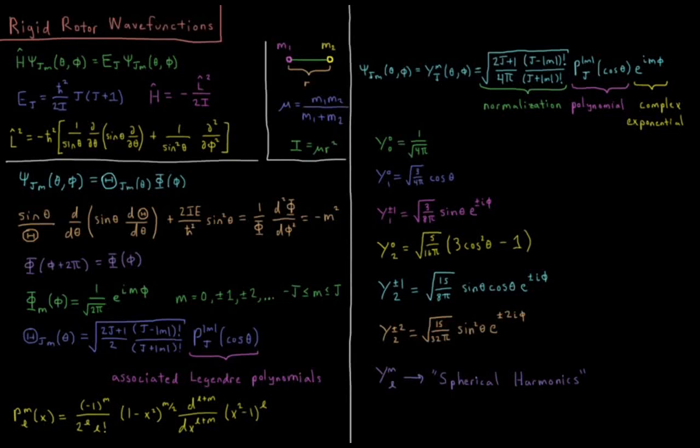This video will discuss the wave functions of the rigid rotor model in quantum mechanics. So our obligatory review: we have two atoms with mass 1 and mass 2. They're separated by a distance r, the bond length, which is a fixed rigid value.